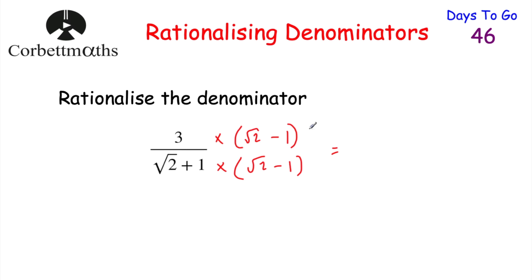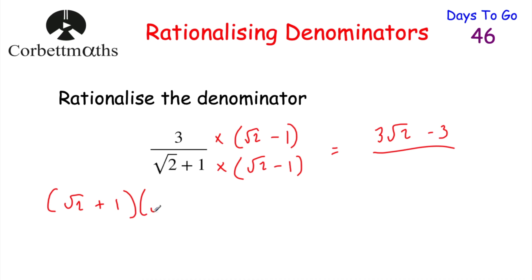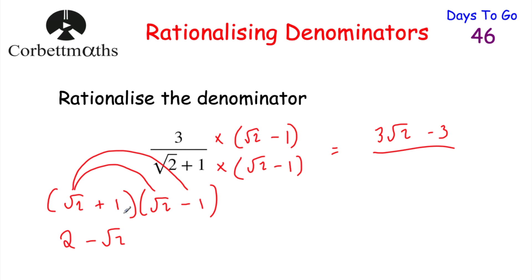So for 3 over (root 2 plus 1), multiply numerator and denominator by (root 2 minus 1). On the numerator: 3 times root 2 is 3√2, and 3 times minus 1 is minus 3. Now expanding the denominator: root 2 times root 2 is 2, root 2 times minus 1 is minus root 2, 1 times root 2 is plus root 2, and 1 times minus 1 is minus 1. So we have 2 minus root 2 plus root 2 minus 1.